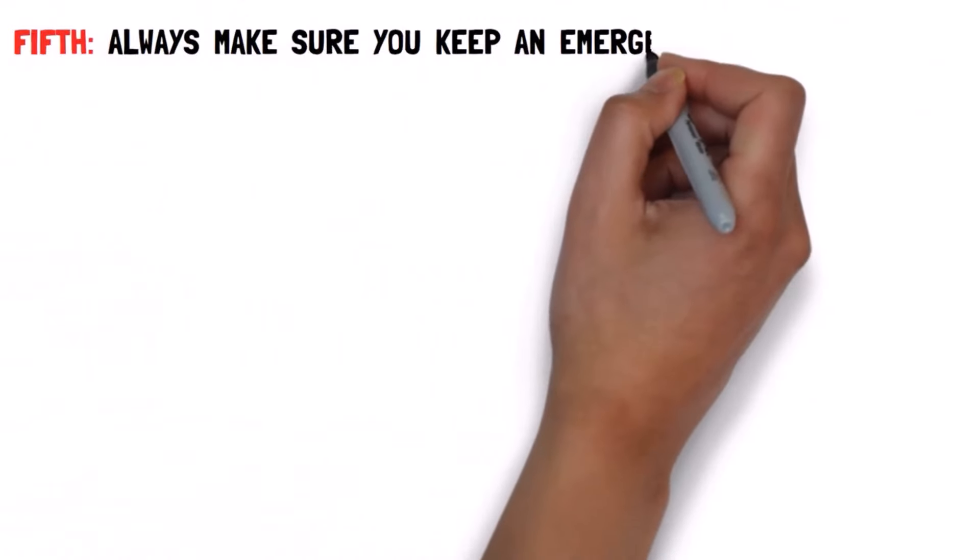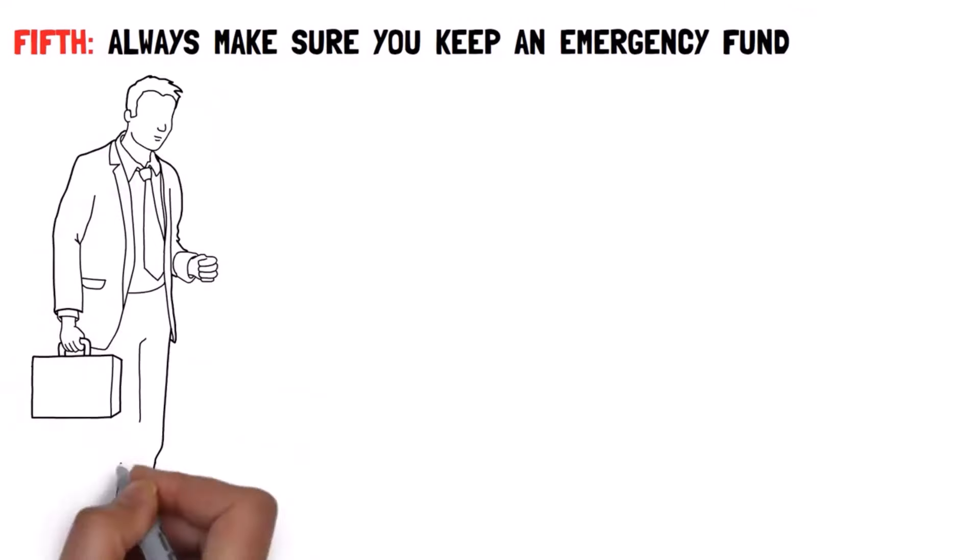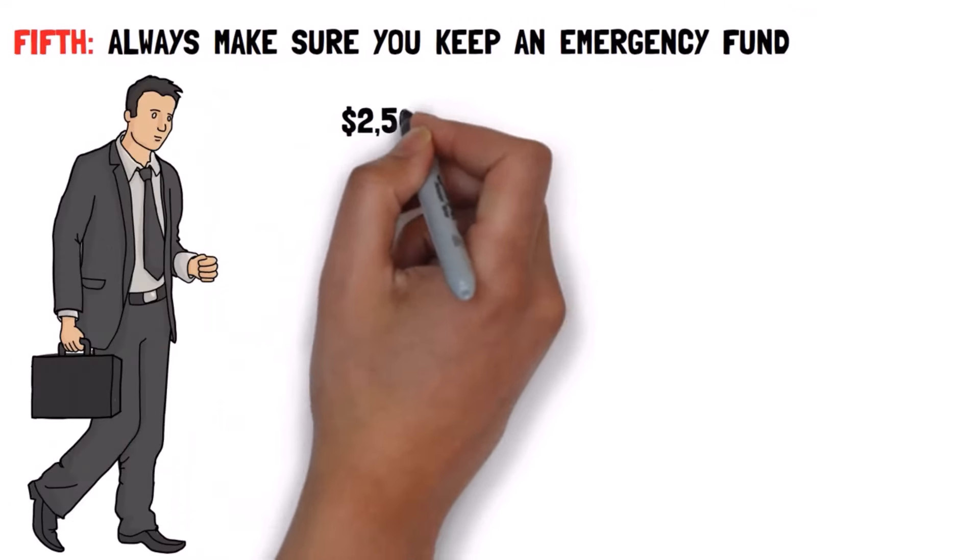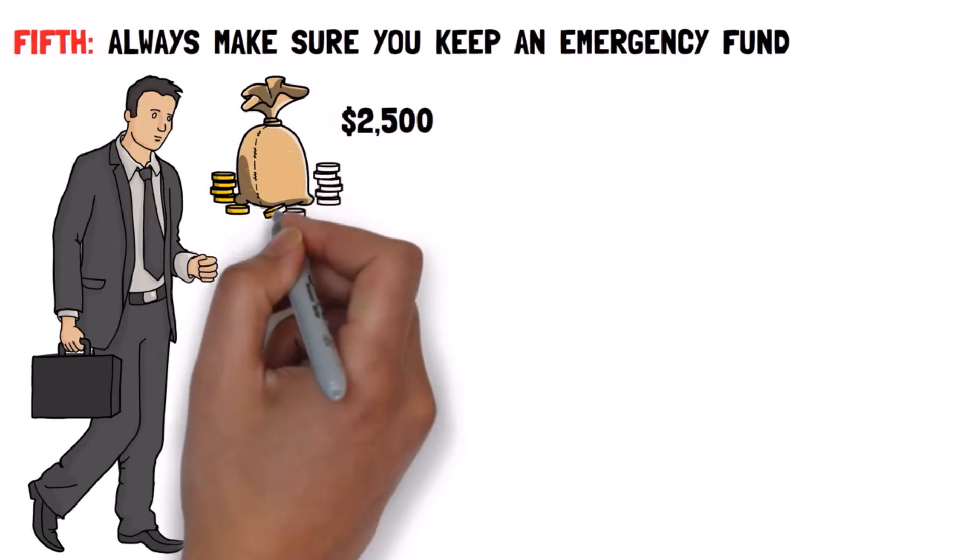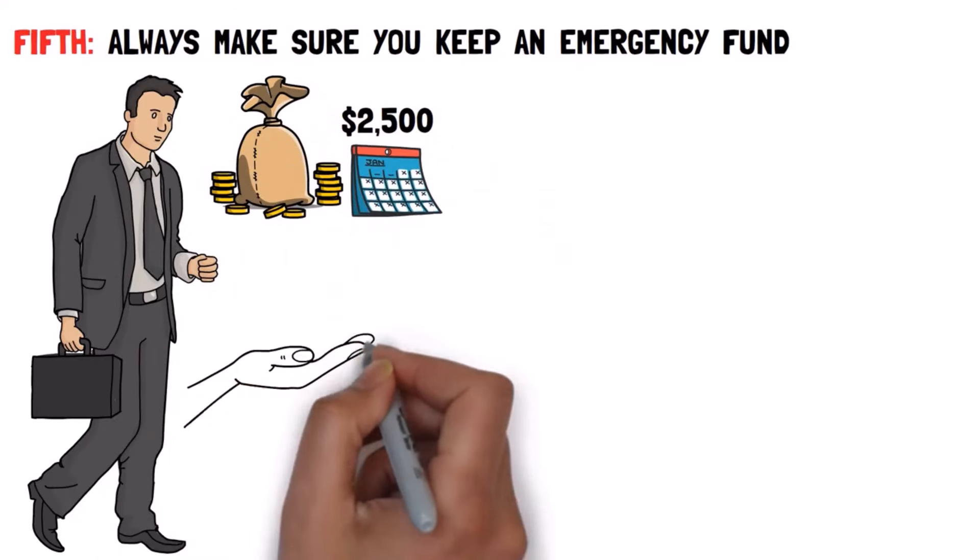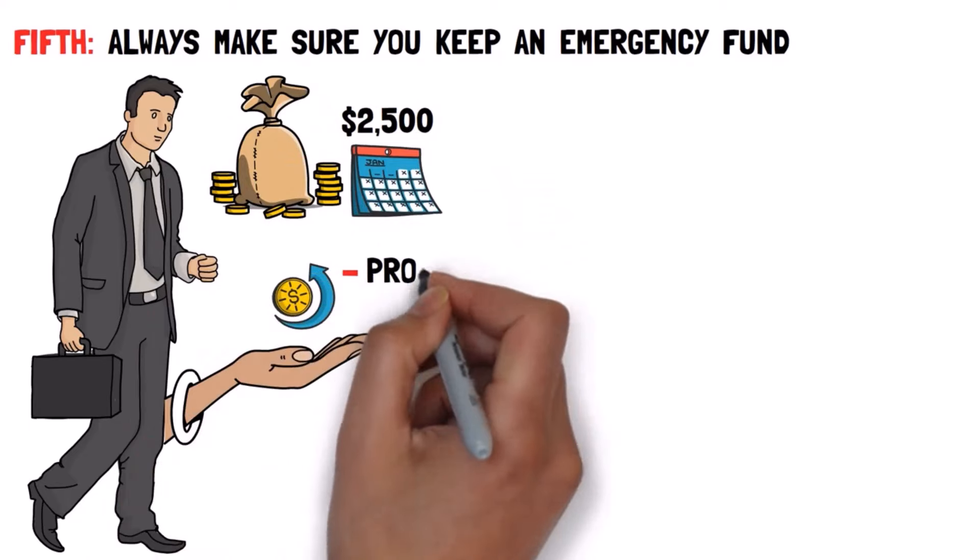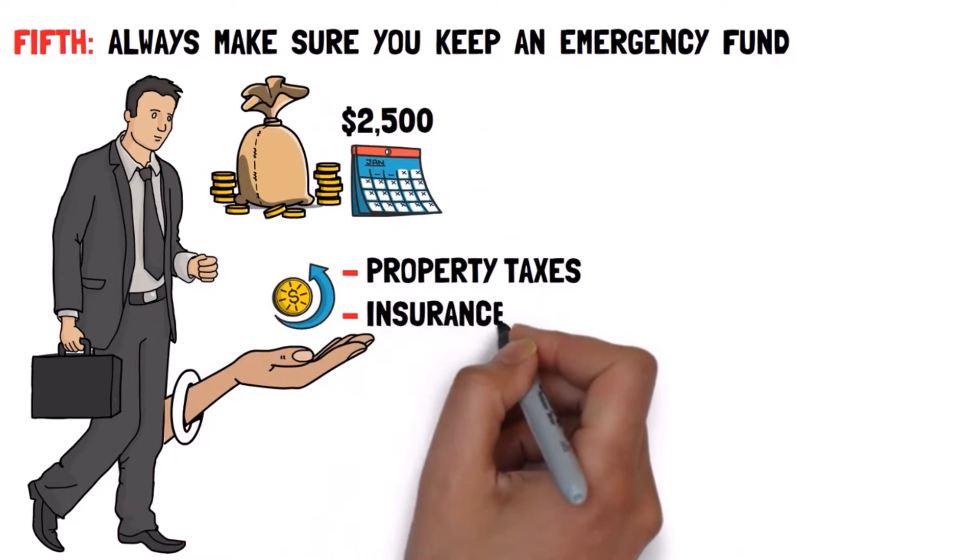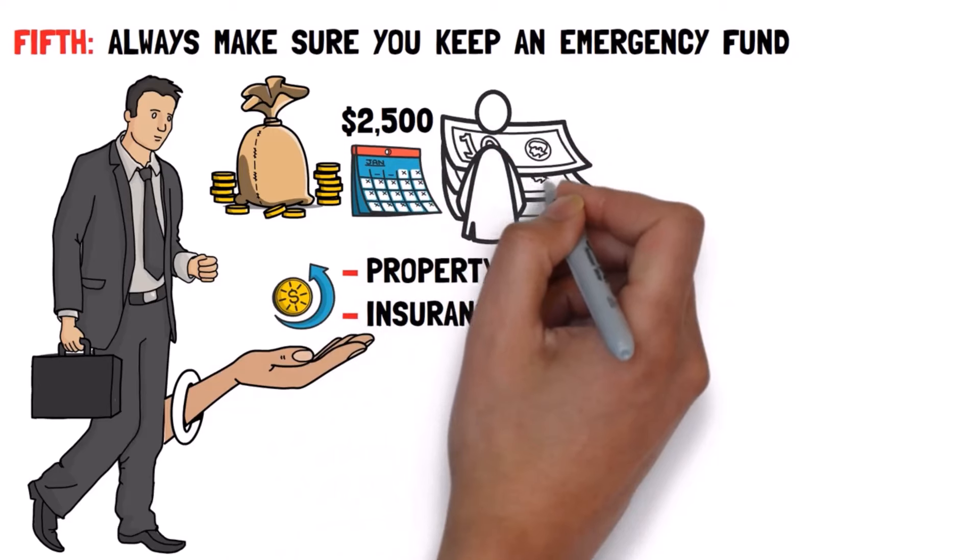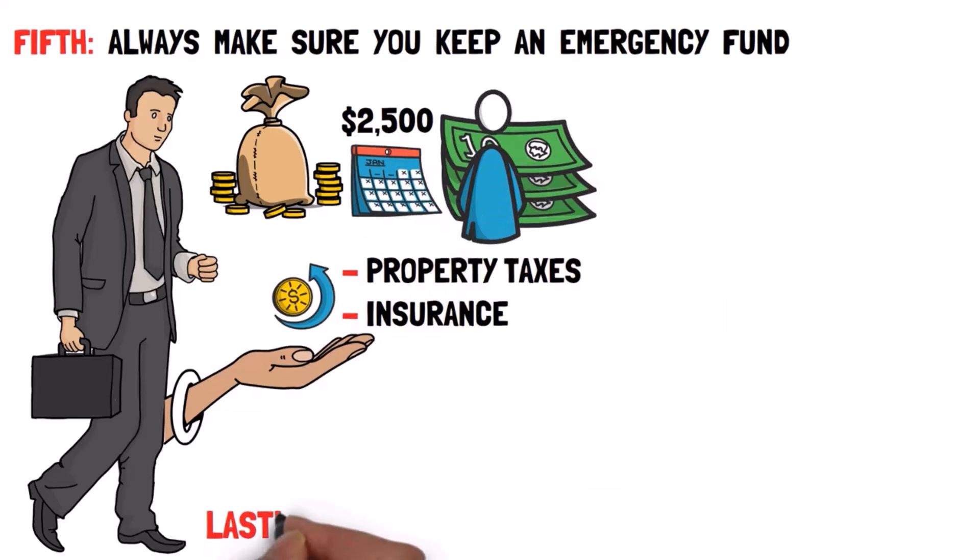Fifth, always make sure you keep an emergency fund on the sidelines for when something comes up, like my $2,500 heating bill after two trouble-free years. You'll also have recurring costs such as property taxes and insurance, so keep several months worth of property expenses in cash for these situations.